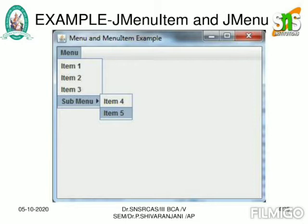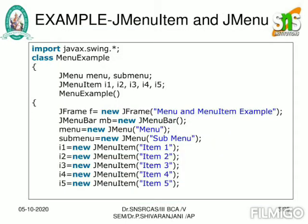Inside the window, I have created a menu bar. Inside that menu, I have three options: Item 1, Item 2, and Item 3. I also have a sub-menu that contains Item 4 and Item 5. So the menu is the menu itself; Item 1, Item 2, and Item 3 form the menu bar; and Item 4 and Item 5 are the menu items. This diagram explains how that window is displayed.